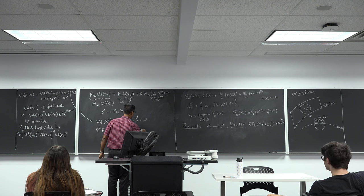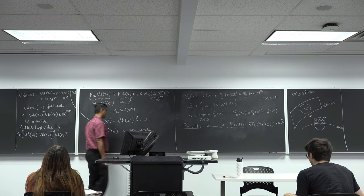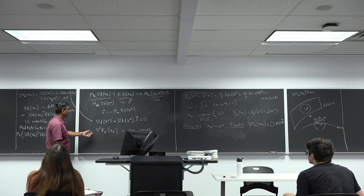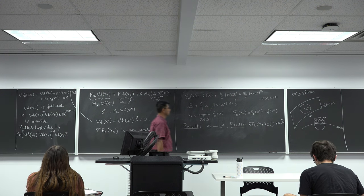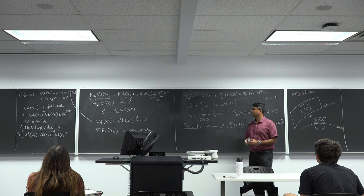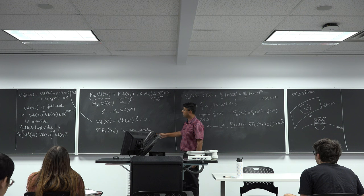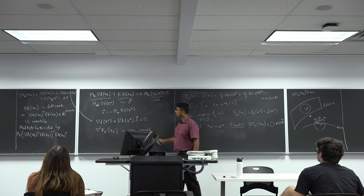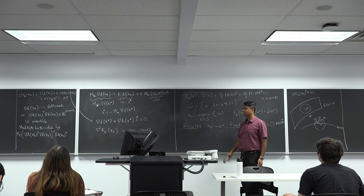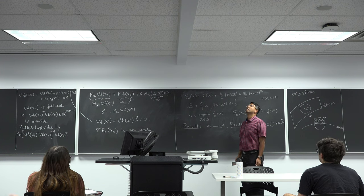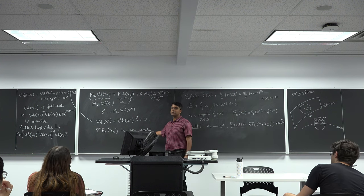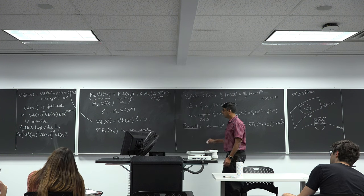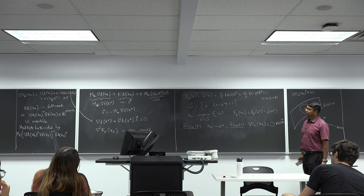We are not going to go over the second order necessary condition in detail, but essentially you do the same thing with the second derivative and you get the result. The second order necessary condition for unconstrained optimization was that the second derivative is positive semi-definite, and a similar condition holds here.